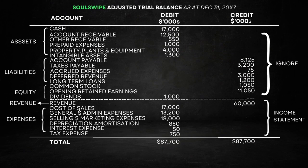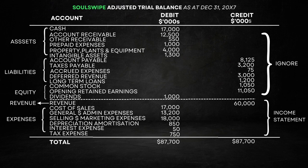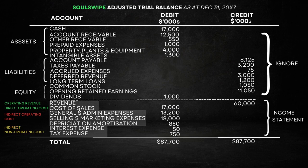The method of creating a detailed income statement is similar — we'll again refer to SoulSwipe's adjusted trial balance. The key is to categorize their expenses. The cost of sales represents a direct operating cost. General, administrative, selling, marketing, depreciation, and amortization expenses are classified as indirect operating costs. Finally, interest and tax expenses fall under indirect non-operating costs.